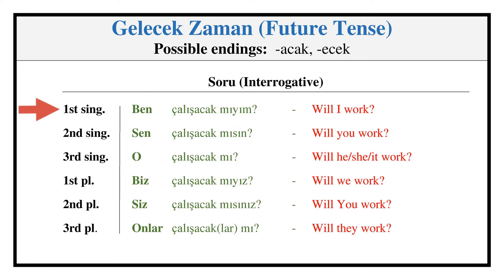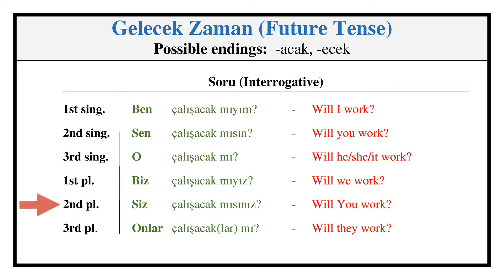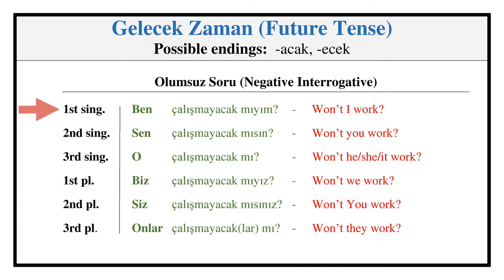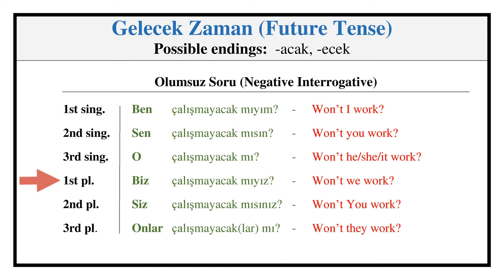Future Tense — Interrogative: ÇALIŞACAK MIYIM, ÇALIŞACAK MISIN, ÇALIŞACAK MI, ÇALIŞACAK MIYIZ, ÇALIŞACAK MISINIZ, ÇALIŞACAKLAR MI? Negative Interrogative: ÇALIŞMAYACAK MIYIM, ÇALIŞMAYACAK MISIN, ÇALIŞMAYACAK MI, ÇALIŞMAYACAK MIYIZ, ÇALIŞMAYACAK MISINIZ, ÇALIŞMAYACAKLAR MI?